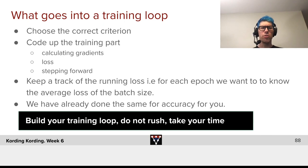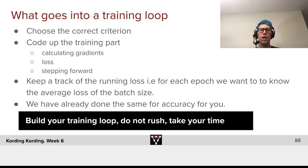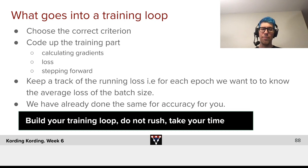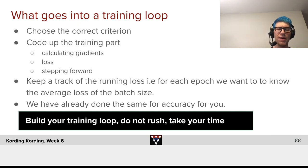What goes into a training loop? The first thing is you need to choose the correct criteria — the loss function that you want to minimize. Then you need to code up the training part: you need to calculate gradients for the loss, and you need to step forward. And then you need to keep track of the running loss for each epoch.